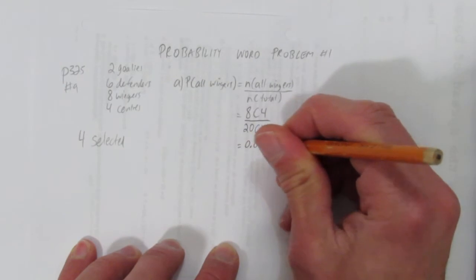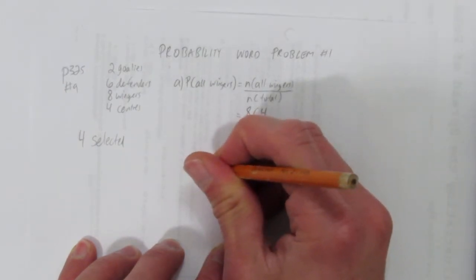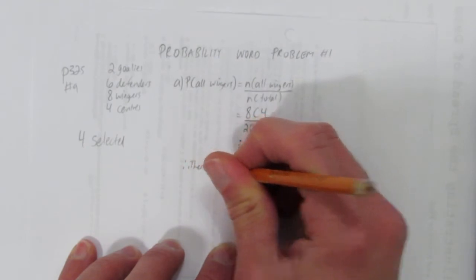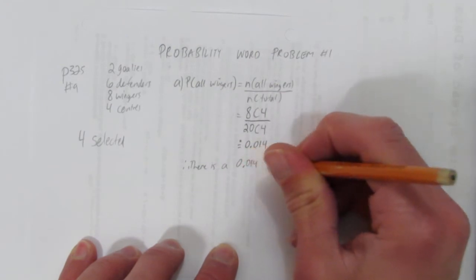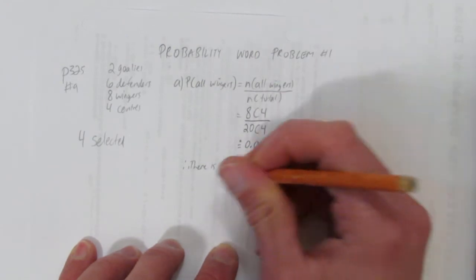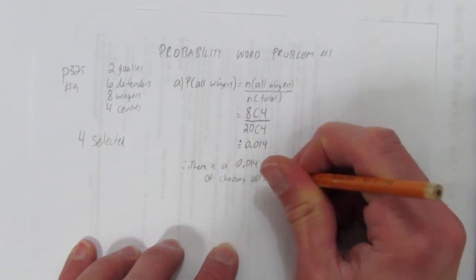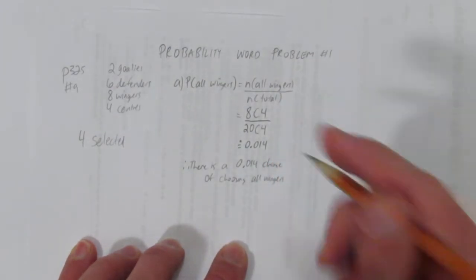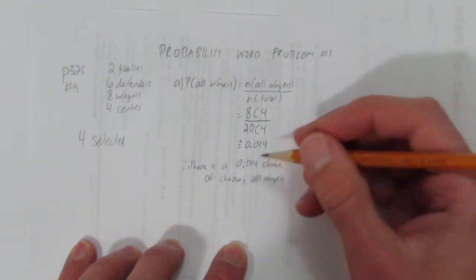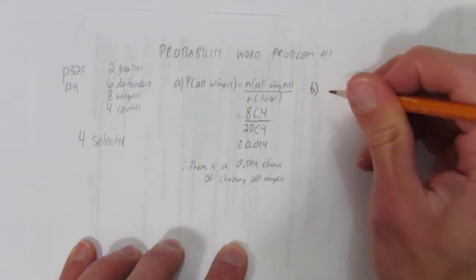Since we rounded, let's put a rounding dot, and then let's put there is a zero point zero one four chance of choosing all wingers. Pretty unlikely. If you could convert that to percent, that's one point four percent approximately. So, not very good chance, but that's okay. We just wanted to see what it would be.